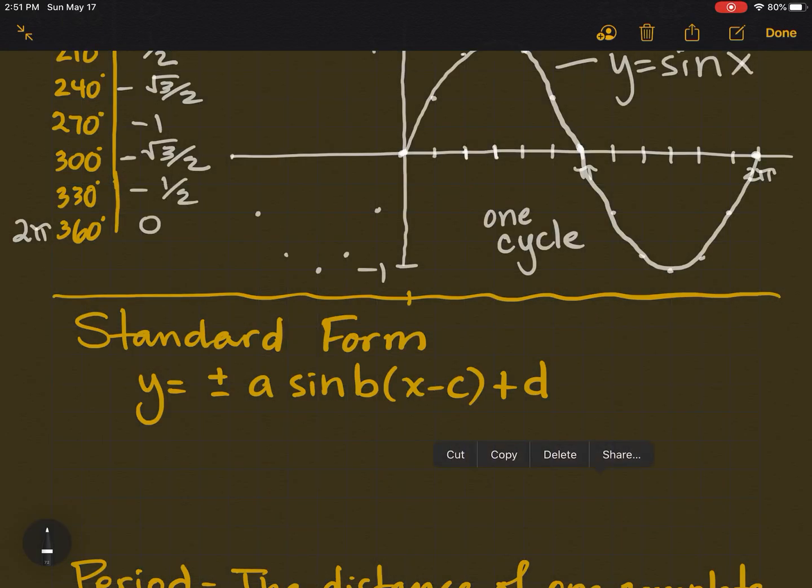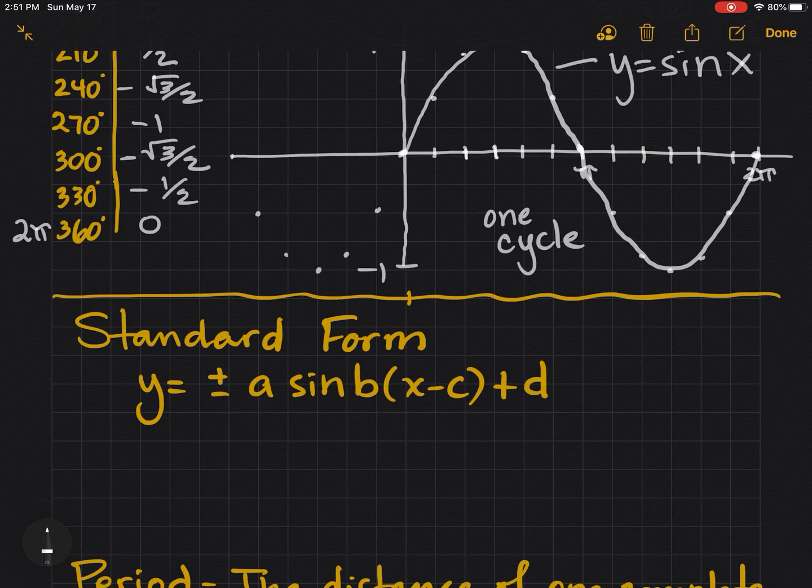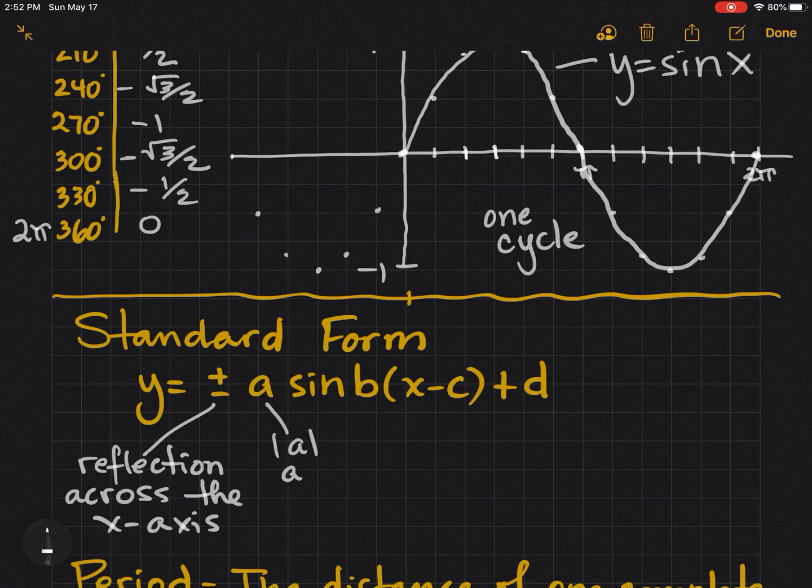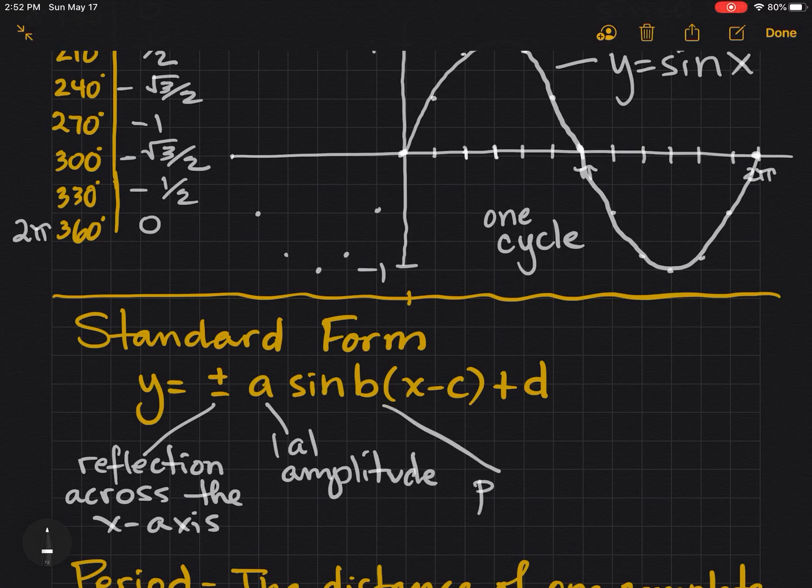Let's look at the standard form for this graph. Y equals plus or minus A sine B parentheses X minus C parentheses plus D. The A, B, C, and D represent different numbers. First of all, if it's negative, that just shows a reflection. And that reflection is across the x-axis. A represents the amplitude. We'll define that in a moment.